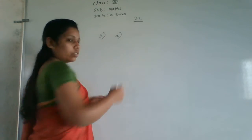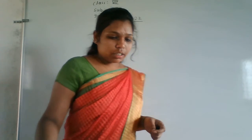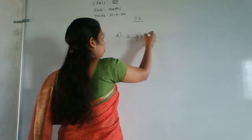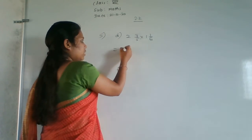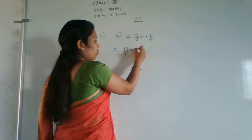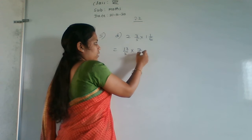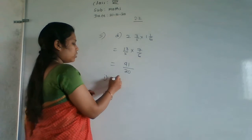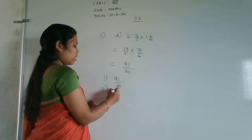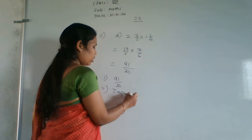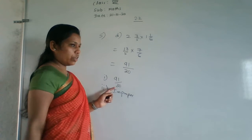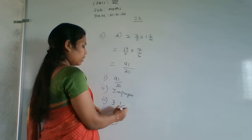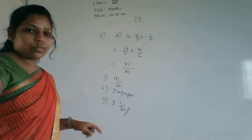Sub-problem D: 2 3/5 × 1 1/6. Convert: 2 3/5 = 13/5 and 1 1/6 = 7/6. Multiply: 13×7=91, 5×6=30. No cancellation. First answer: 91/30. Second: improper fraction. Third: 30 goes into 91 three times (3×30=90) with remainder 1, giving mixed fraction 3 and 1/30.